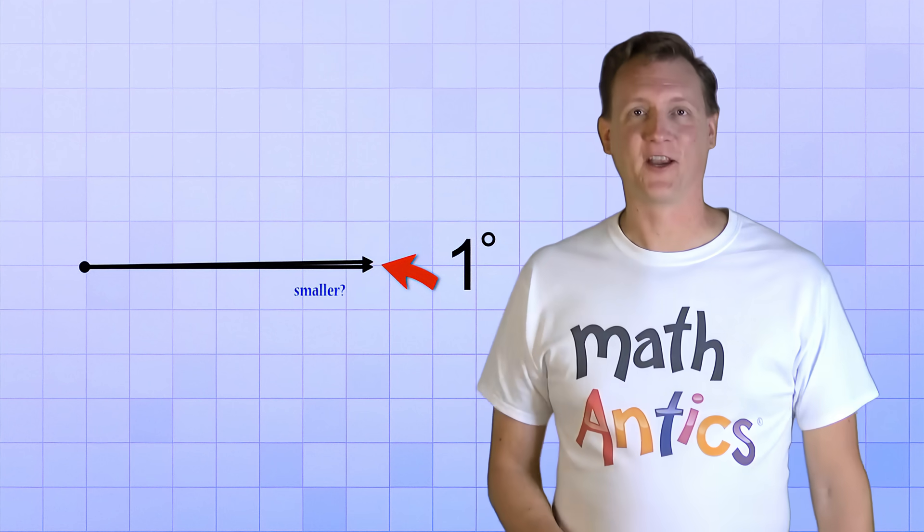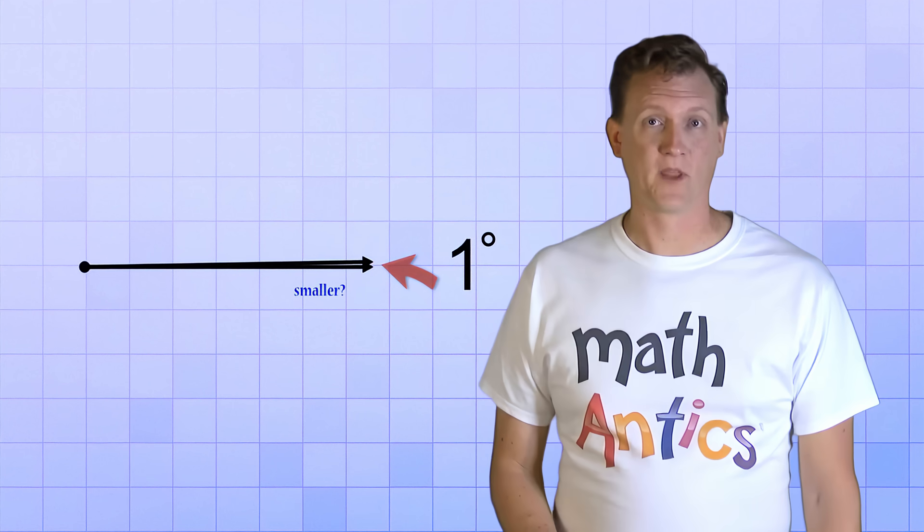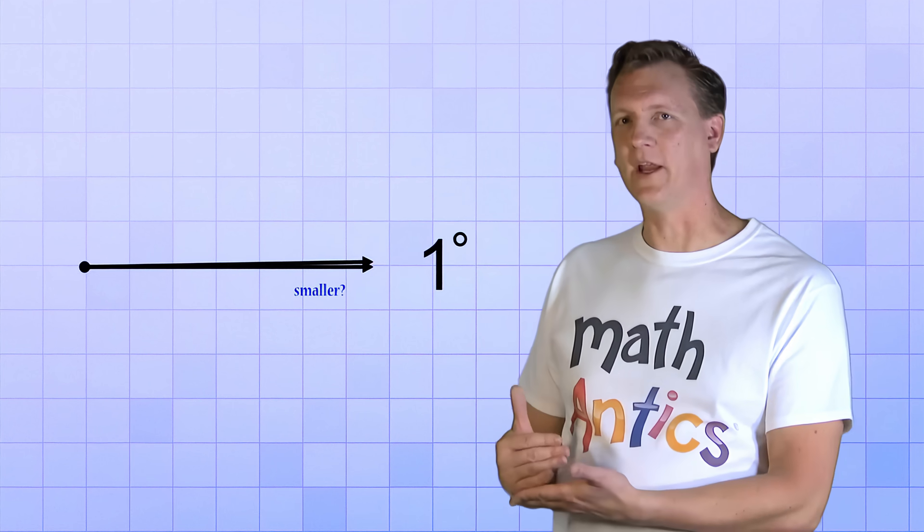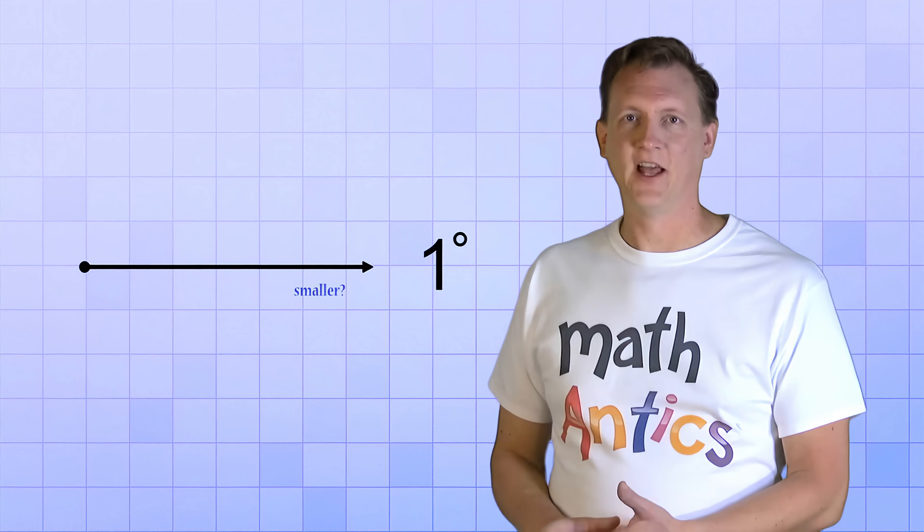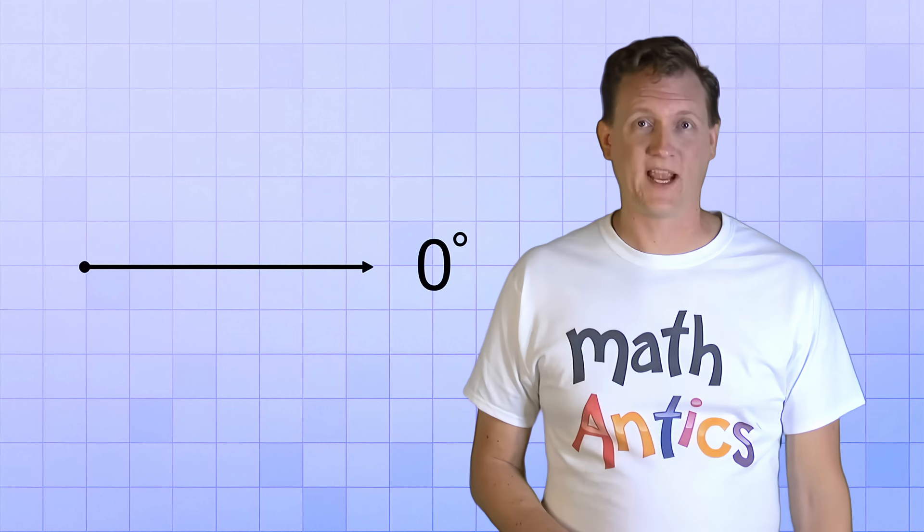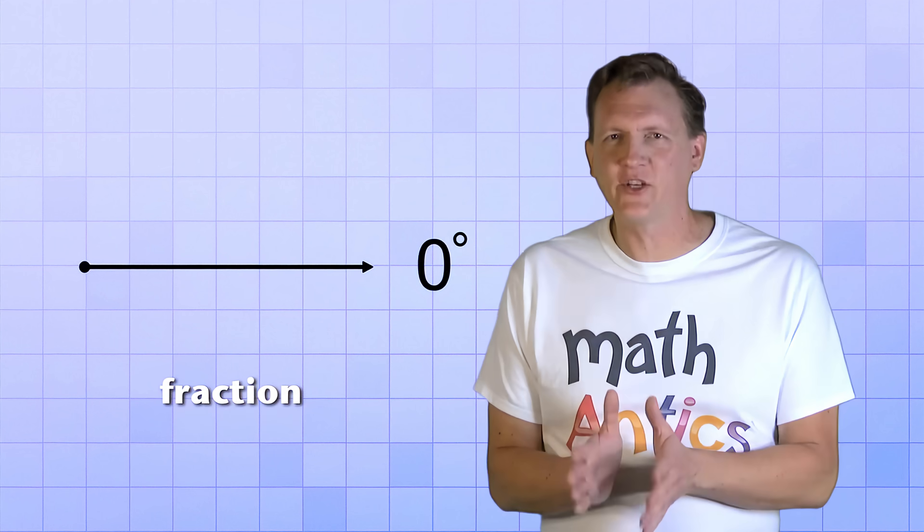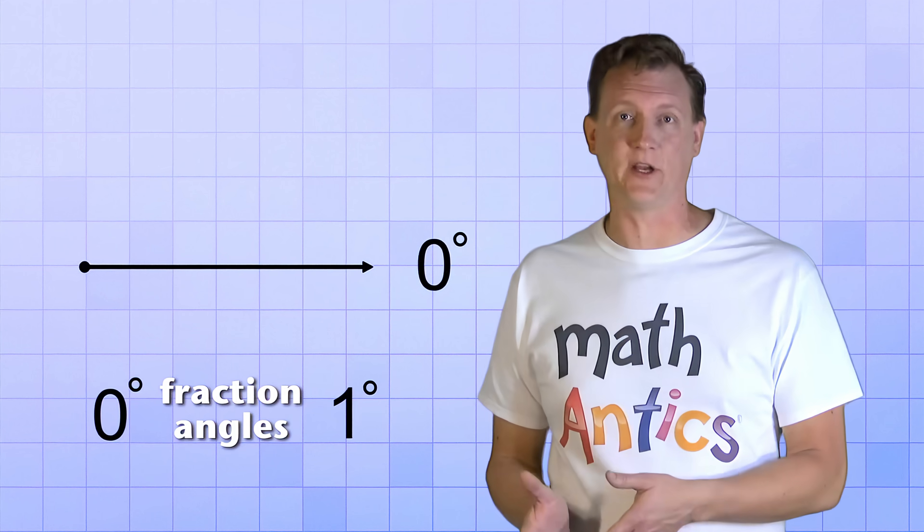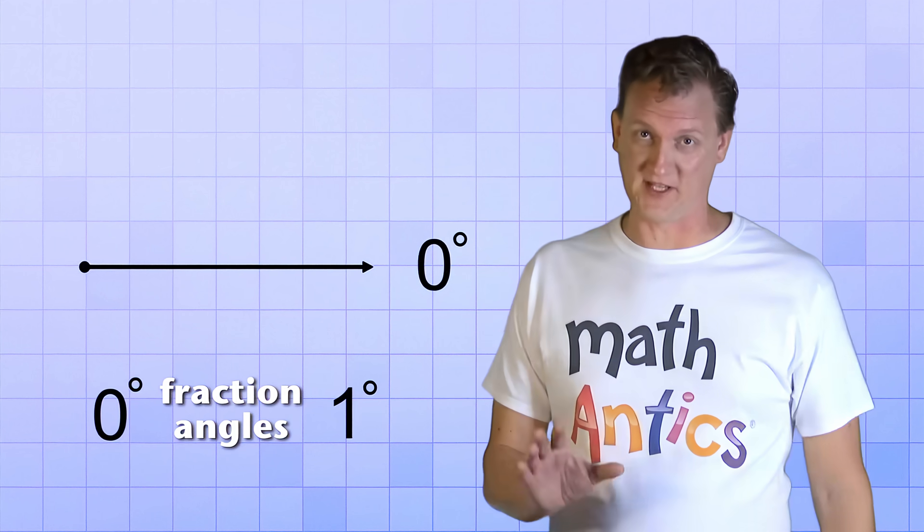We need to zoom in on it to see that it really is an angle. In fact, you might wonder if there could be any angles smaller than 1 degree. Yup, there sure are. And we saw one just a second ago. Before we rotated our top ray, when our rays were exactly on top of each other, that was a 0 degree angle. And there's a whole range of tiny fraction angles in between 0 and 1 degree. But we aren't going to learn about them in this video.